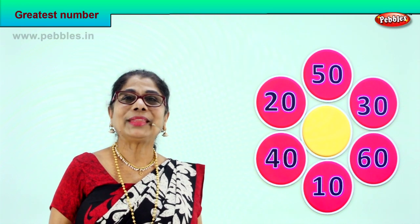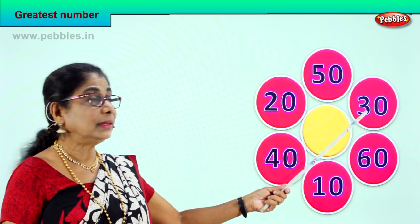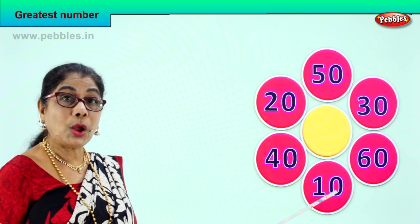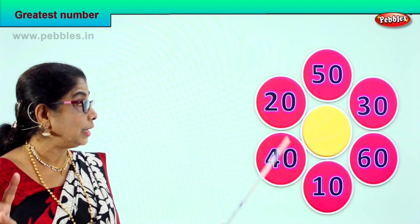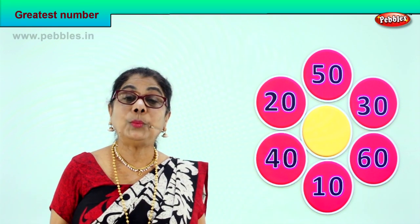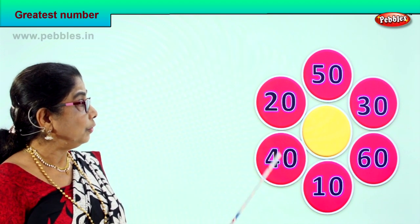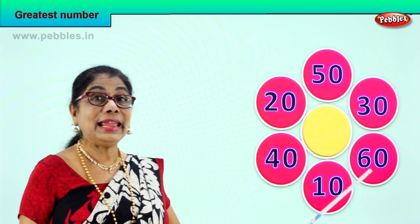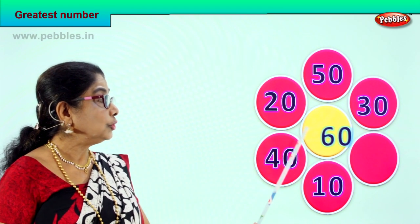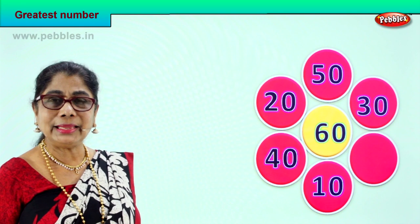Did you enjoy it? Good. Let's take another exercise. Look at another set of numbers — let's look at all the tens. 30 has 3 tens. 60 has 6 tens. 10 has 1 ten. 40 has 4 tens. 20 has 2 tens. 50 has 5 tens. Which number has the highest number of tens? It's 60 — 6 tens — that's the biggest number of all, so we put it in the middle. The greatest number among all these is 60.